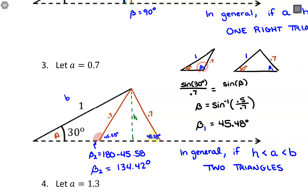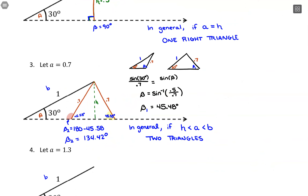For this two-triangle case, you need to look at the height of the triangle, compare it to the side length a — confirming that the height is the shortest piece — and also confirm that side length a is shorter than side length b. That comparison determines you'll have two triangles to solve.